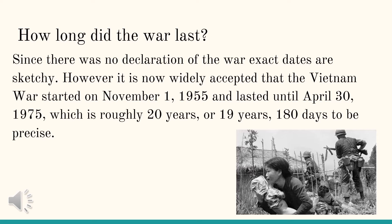How long did the war last? Since there was no declaration of war, exact dates are sketchy. However, it is now widely accepted that the Vietnam War started on November 1, 1955 and lasted until April 30, 1975, which is roughly 20 years, or 19 years and 180 days to be precise.